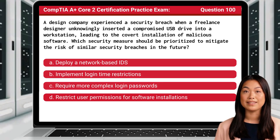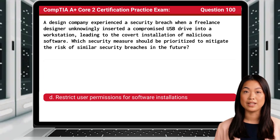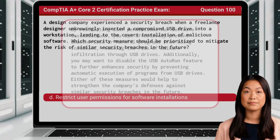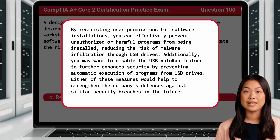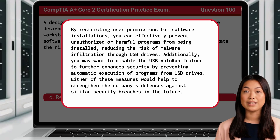The answer is D: Restrict user permissions for software installations. By restricting user permissions for software installations, you can effectively prevent unauthorized or harmful programs from being installed, reducing the risk of malware infiltration through USB drives. Additionally, you may want to disable the USB auto-run feature to further enhance security by preventing automatic execution of programs from USB drives. Either of these measures would help strengthen the company's defenses against similar security breaches in the future.